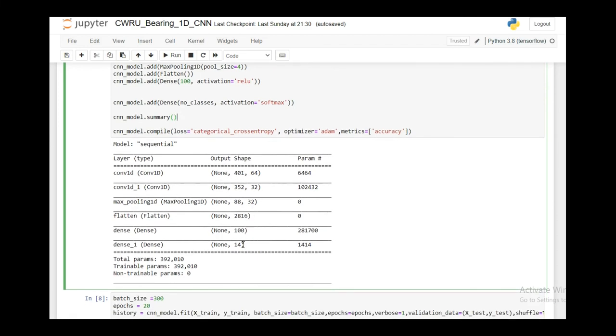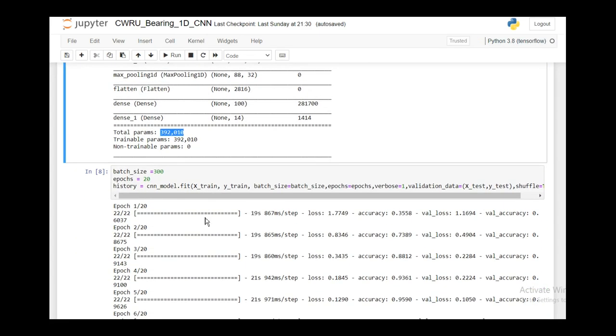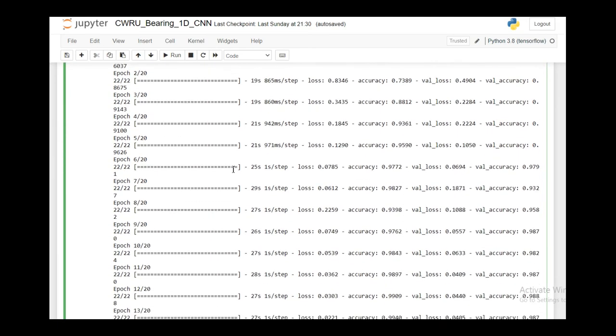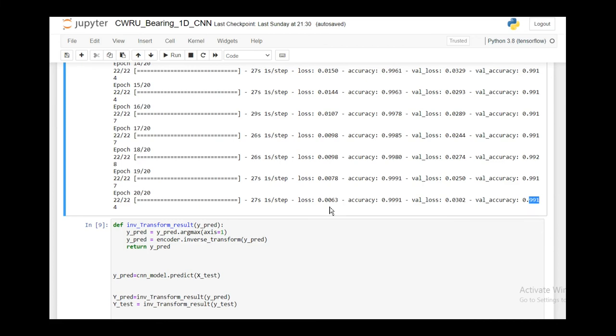So I am taking a batch size of 300 and then I'm fitting the CNN model where my validation data is x test and y test and x train and y train are my input data. You can see that after training, after 20 epochs, my train accuracy is 99.9% and my validation accuracy is 99.14%, which is an improvement compared to the ANN video that we did. There we got something around 96% accuracy.